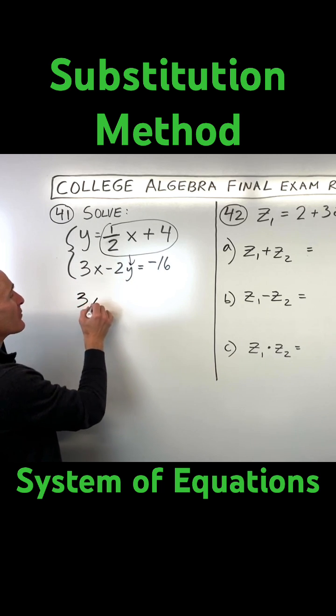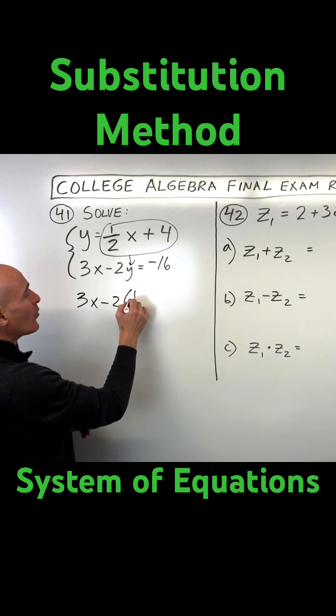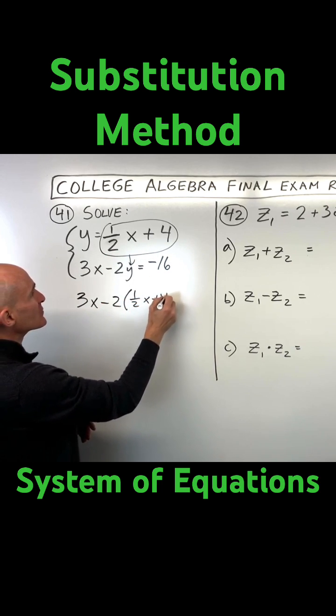If we do that, we get 3x minus 2 times, instead of y, we're going to put what y equals, that's 1 half x plus 4,